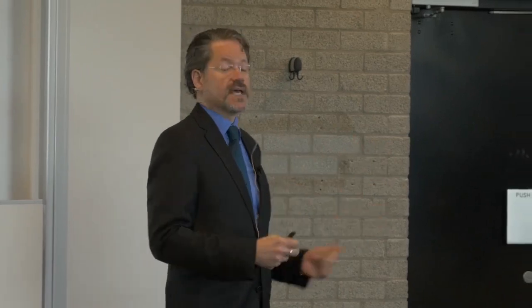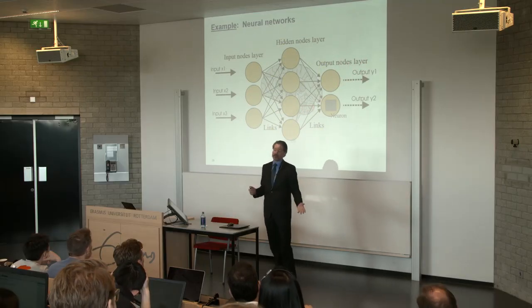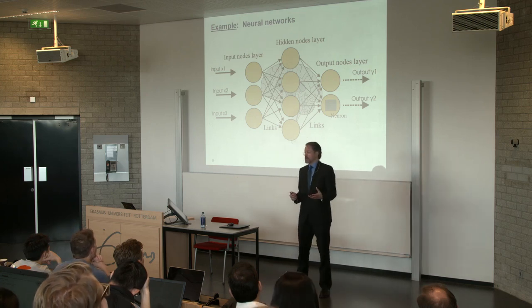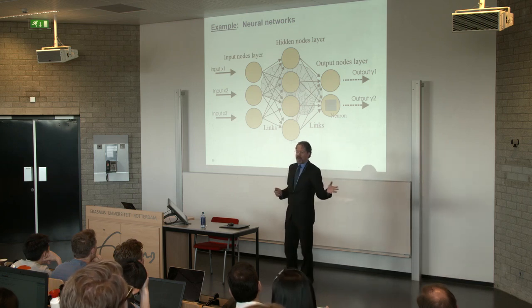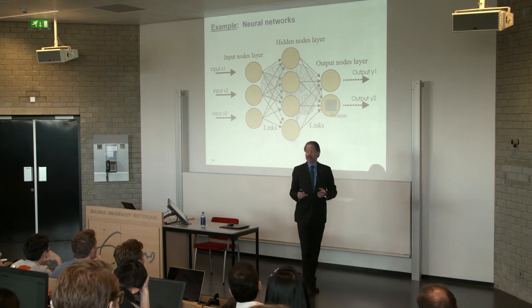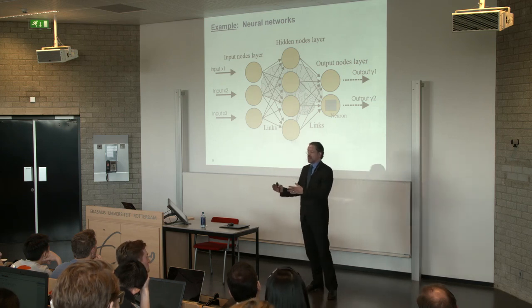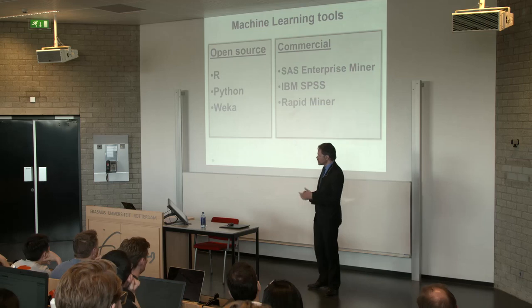In supervised machine learning, we take a test set of data, a training set, and a validation set, and feed them into the machine. The machine uses the training set to build up a predictive model, then validates and optionally tests it. An example of this is neural networks, a type of algorithm based on how neurons work in the brain — they generate a pathway and as it is validated, it strengthens. When presented with complex data and a training set, the neural network builds its own understanding of how things match.